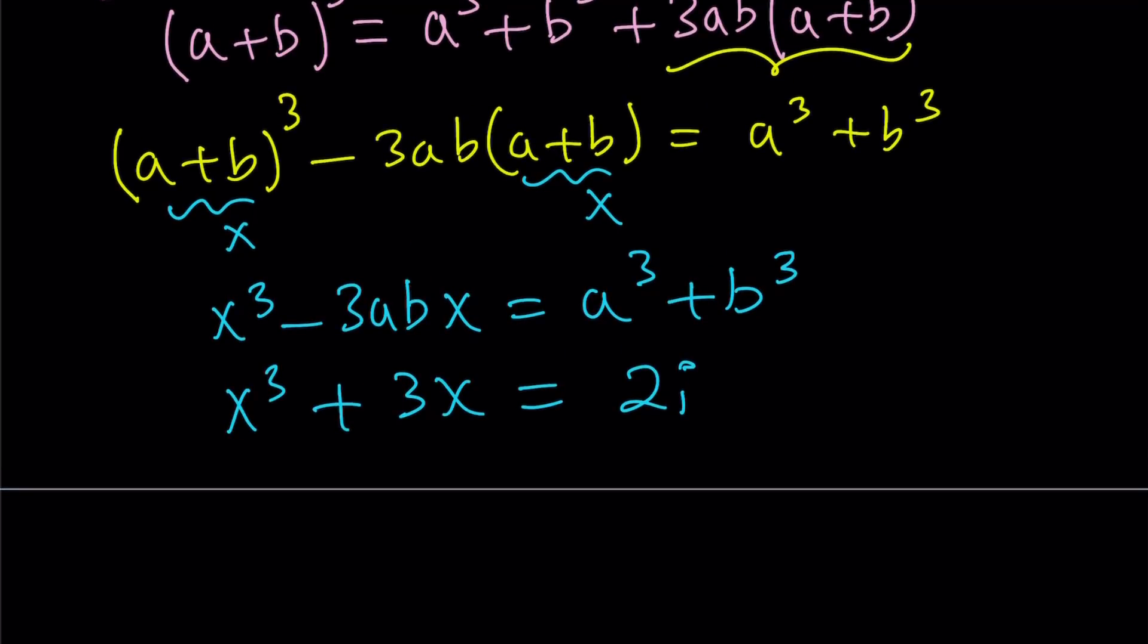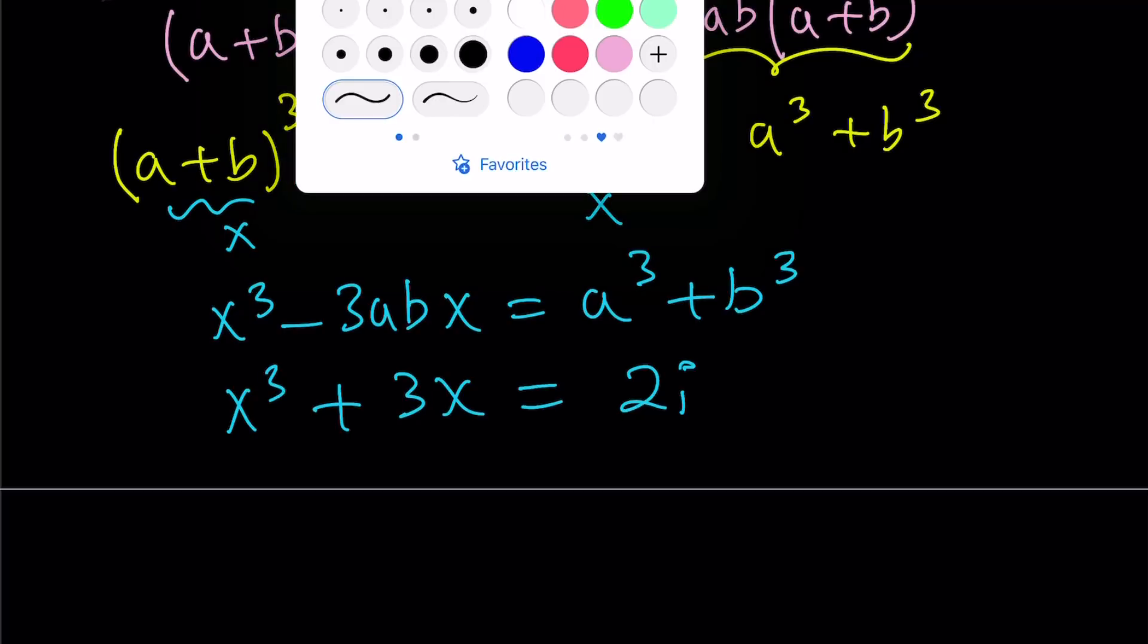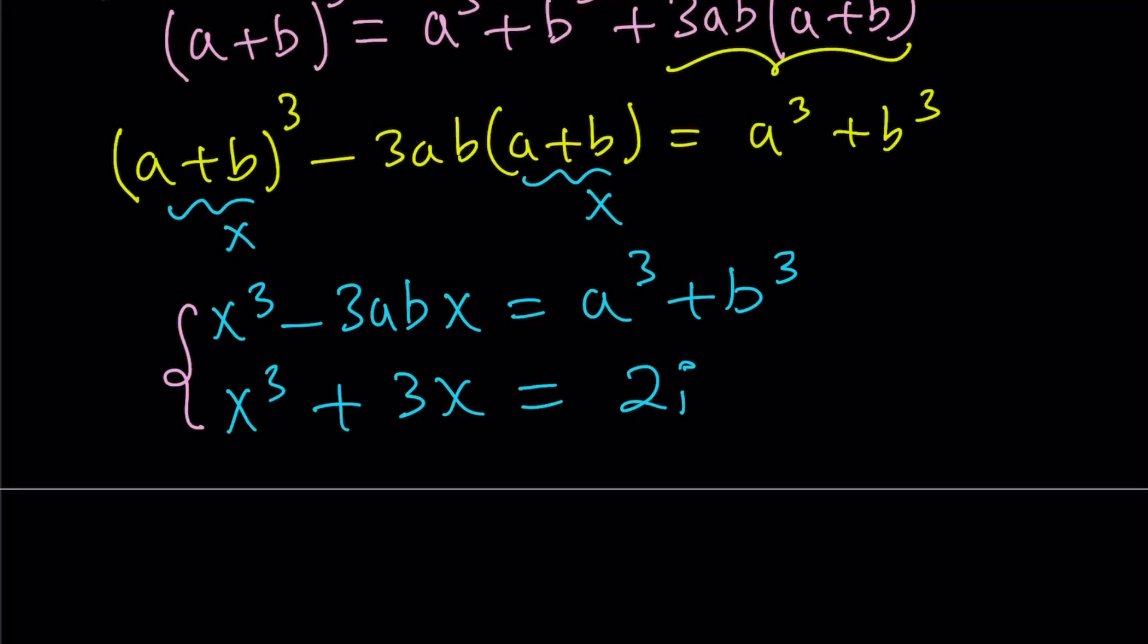A number whose square equals negative 1, something that doesn't exist in the real world, but it has so many uses in electronics, in physics, in mathematics, differential equations, so on and so forth. Anyways, I talked too much again, let's get back to work. So here, by comparing these two equations, you should notice that we could set negative 3ab equal to 3, and a cubed plus b cubed equal to 2i.